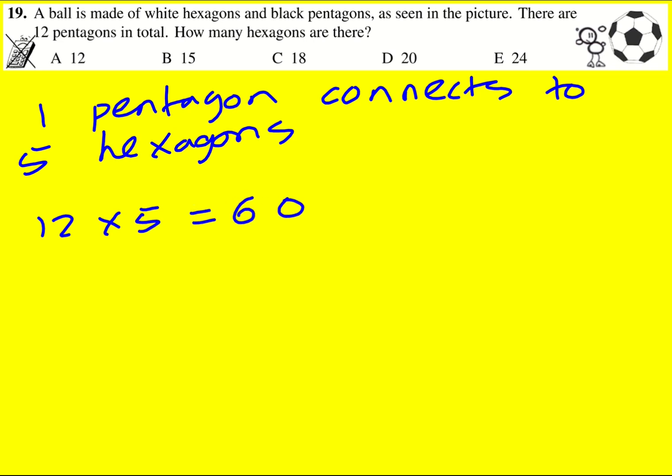However, that is not the final answer, because if you look at it, you can see that every hexagon, if I just pick this one here, is shared between three pentagons. So I need to take the 60 and divide it by 3 to account for that. Essentially, I have triple counted, which gives me a final answer of 20.